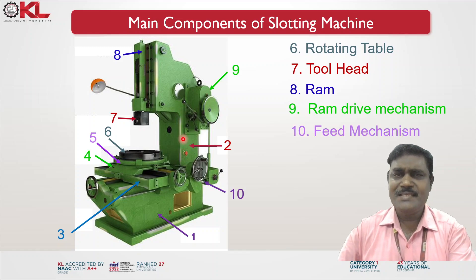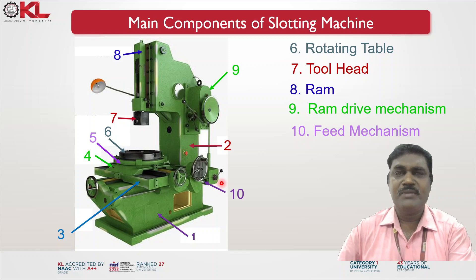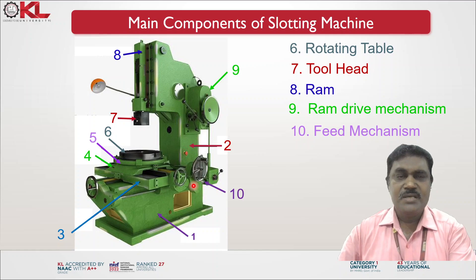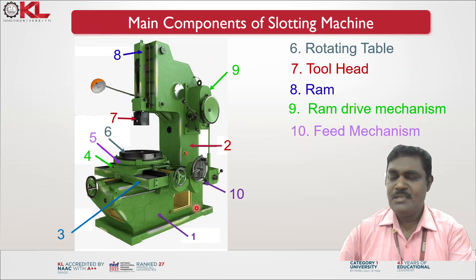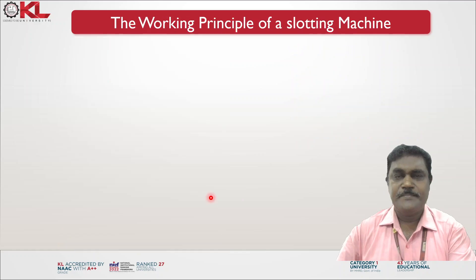The tenth component is the feed mechanism. Whenever you apply the automatic feed, you engage this feed mechanism. These are the ten basic parts of a slotting machine.